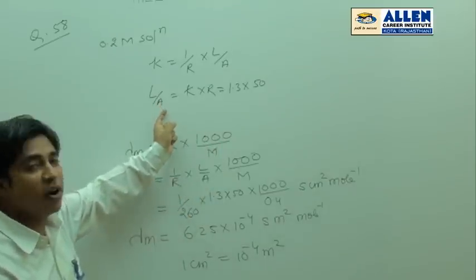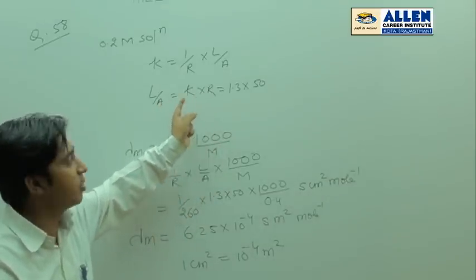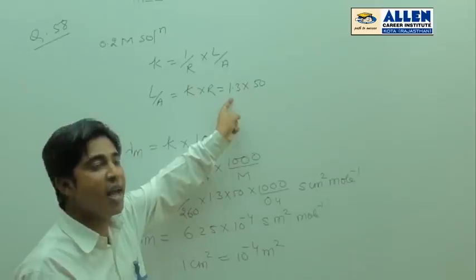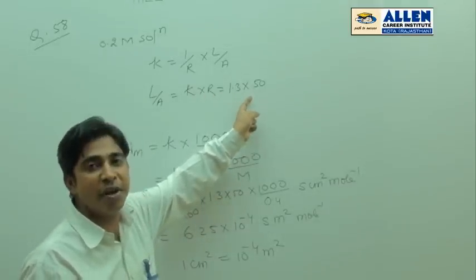Cell constant equals specific conductance times resistance. Specific conductance is given 1.3 and resistance is given 50.